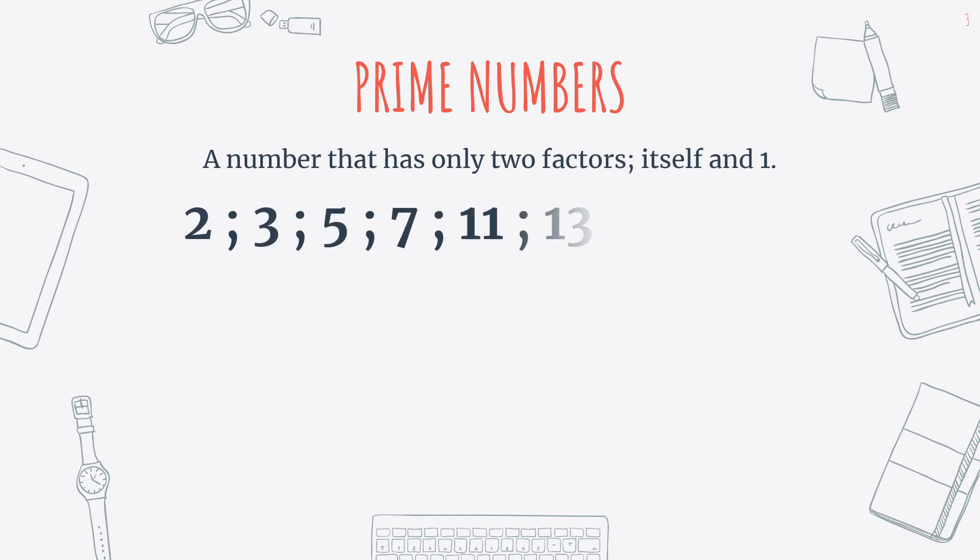A prime number is any number that has only two factors, itself and 1. So these are all examples of prime numbers. So if you have a look at all the numbers, they only have two factors. So 2 times 1 is 2. There aren't any more factors. 3 times 1 is 3. 5 times 1 is 5. So all of these numbers, they can't be split up into any more than two factors.